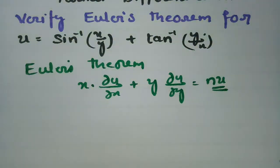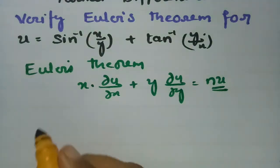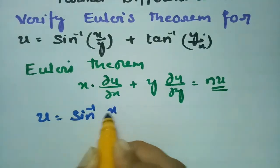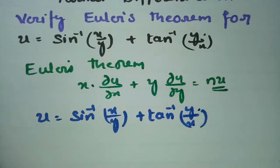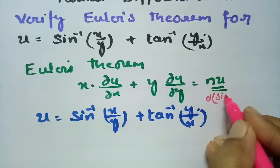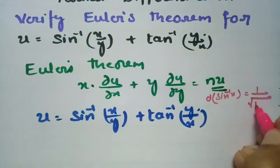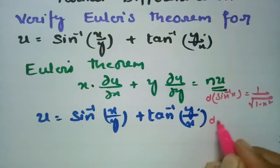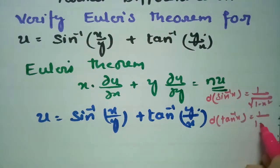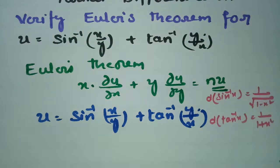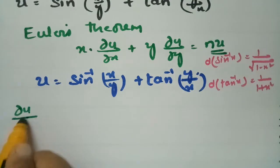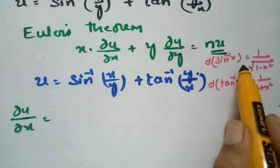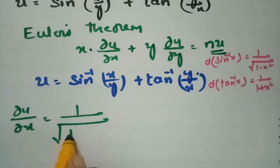The u value is given as sin inverse of x by y plus tan inverse of y by x. I need the derivatives of sin inverse of x and tan inverse of x. The derivative of sin inverse of x is 1 by root over 1 minus x square, and the derivative of tan inverse of x is 1 by 1 plus x square. I am going to use these two formulae.